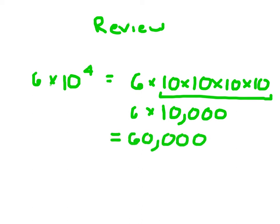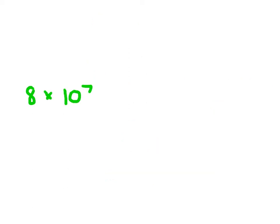A little bit easier than that — I would just place the 6 followed by 1, 2, 3, 4 zeros. Even as those exponents got larger, that's just 8 followed by 7 zeros.